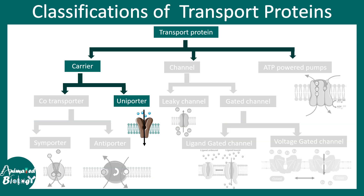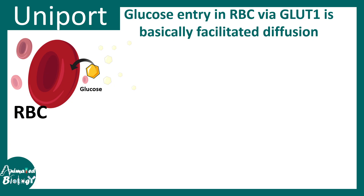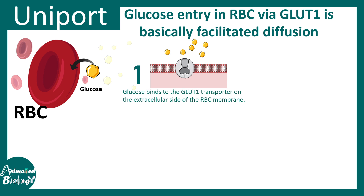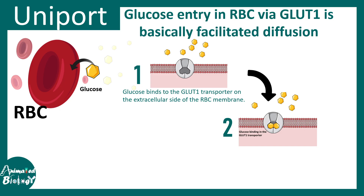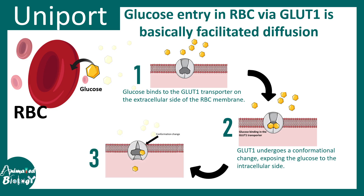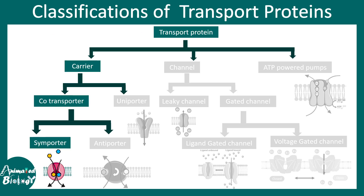Now we'll go into details and look at each category. First we are talking about uniporters. As an example of uniport, we'll look at GLUT1, which helps in glucose entry into red blood cells. Glucose binds to the GLUT1 transporter on the extracellular side of the RBC membrane. This binding triggers a conformational change that opens up the transporter on the cytosolic side, leading to the passage of glucose inside the RBC. This is unidirectional transport of one molecule — glucose — through the RBC membrane.